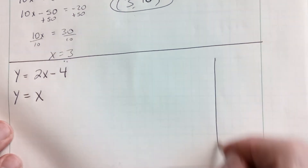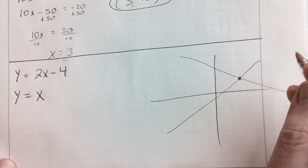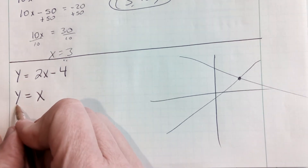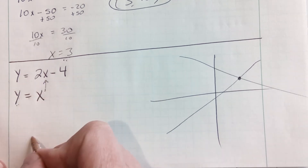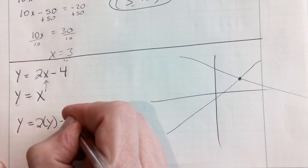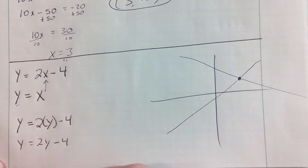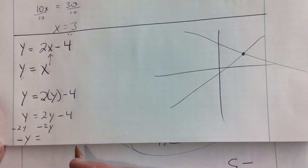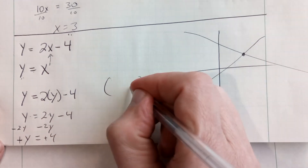We might not actually get a vertical or horizontal line — they both might be slanted. One might come up like this, one might come down like this, but we still need to find the intersection point. The bottom equation says y equals x. So I'm going to replace that x with a y: y equals 2 times y minus 4. I solve: y equals 2y minus 4, minus 2y from both sides gives me negative y equals negative 4. Cancel the minus sign and I get a y value of 4.